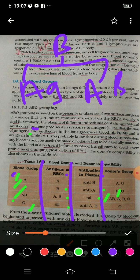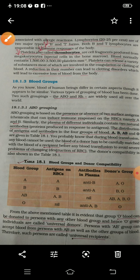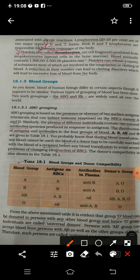Now, regarding who can receive: blood group A can receive from A and O; blood group B can receive from B and O; AB can receive from all blood groups — it is the universal recipient; and O can receive only from O. So O is the universal donor and AB is the universal recipient. Keep this in mind.